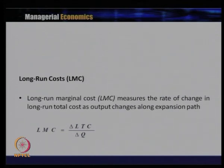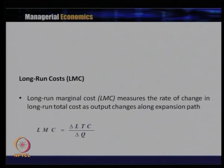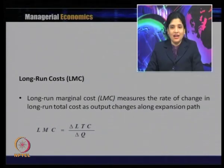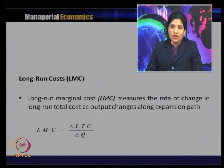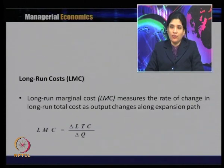It is the rate of change in the long run total cost as output changes along the expansion path. The long run marginal cost (LMC) is delta LTC divided by delta Q — that is, the change in long run total cost with respect to change in quantity, or equivalently, the first order derivative of total cost with respect to Q.